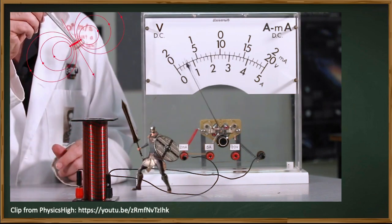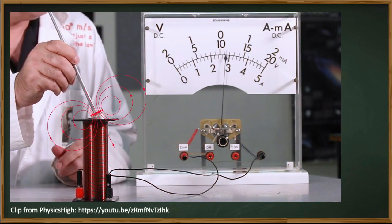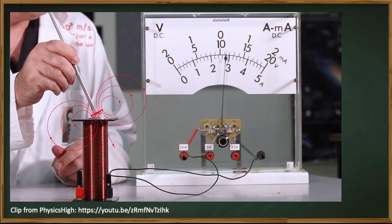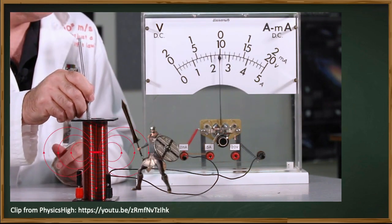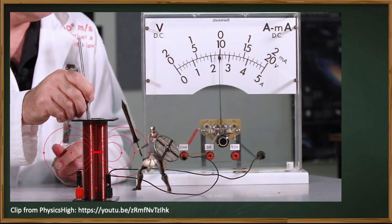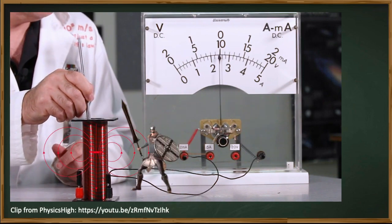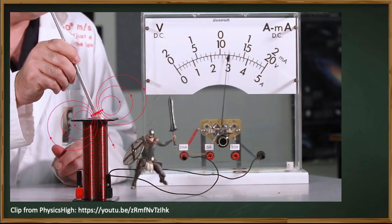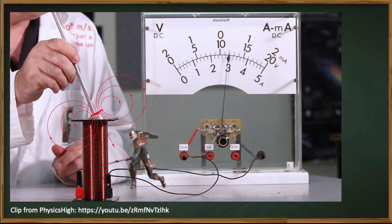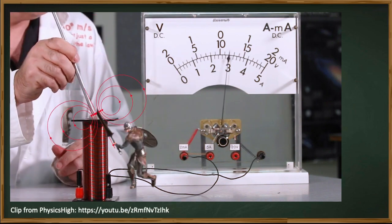Another observation: when the magnet is held in the coil for a couple of seconds, or is outside the coil, the needle returns to zero. This implies that if the magnet does not move, there is no generated voltage or EMF. This leads to the question: how can we increase the induced voltage? The second law answers this question.